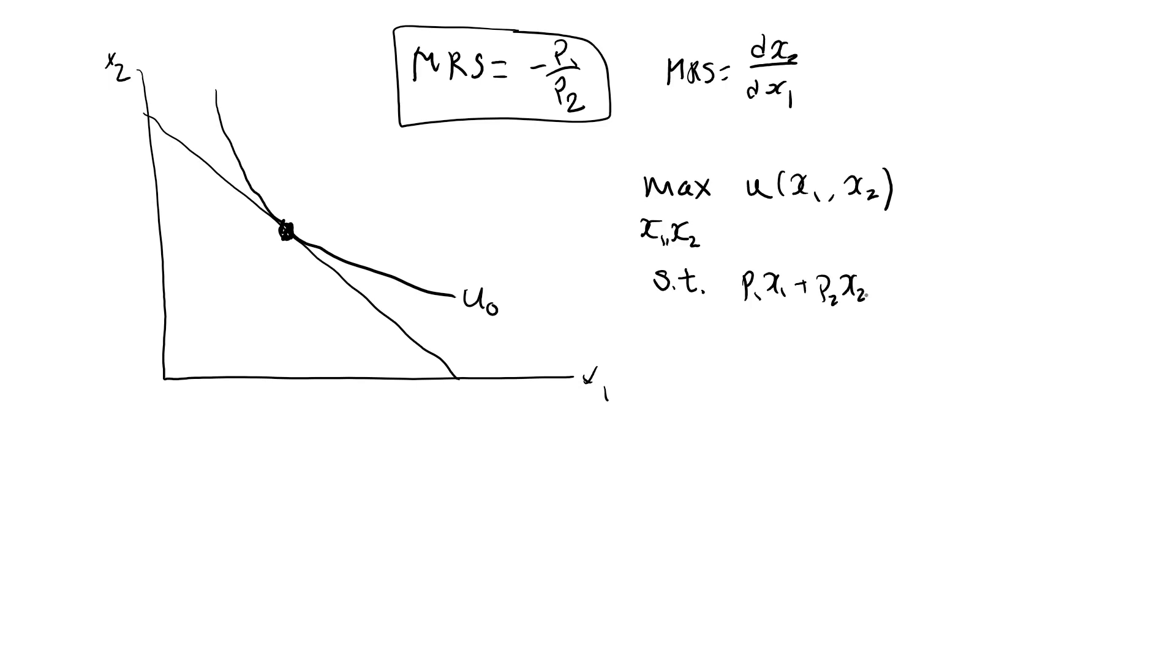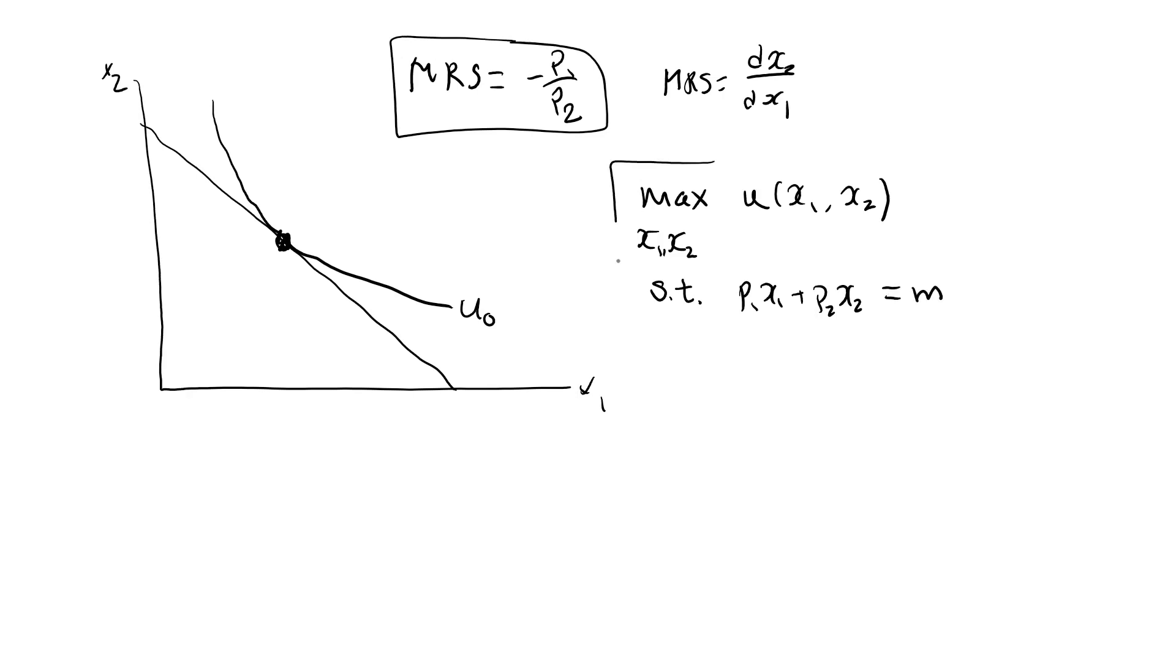must be less than or equal to income. Since we are working with well-behaved preferences, we know that she will spend her entire income, so we can just as well write equal to m. So this is the mathematical problem that we solve in microeconomics when we find the optimal bundle.